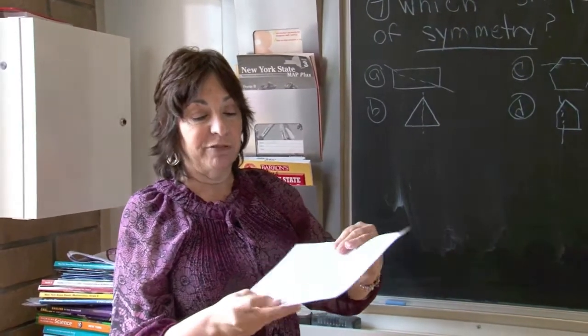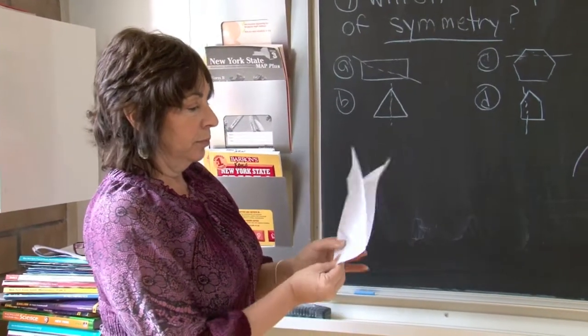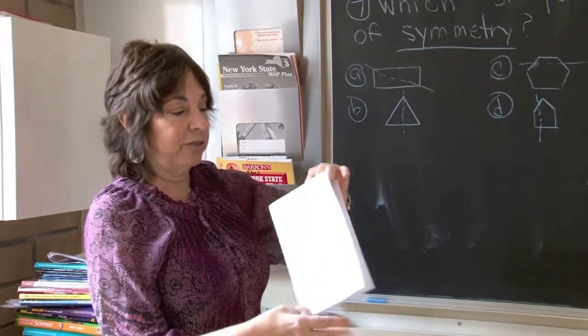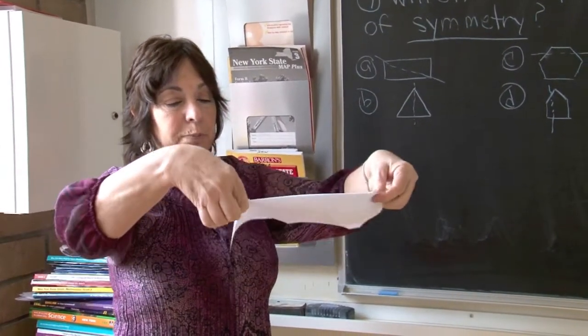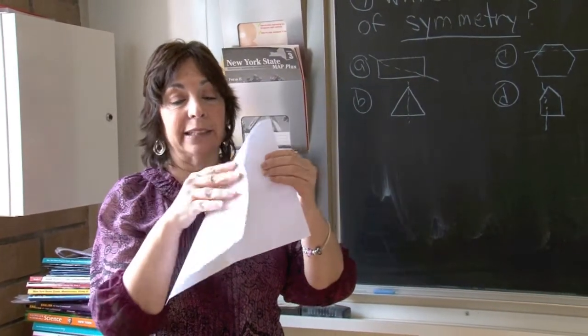A rectangle does have a line of symmetry if I was to fold it in half this way vertically, or if I was to fold it in half horizontally. It would be the same flip over, but it will not be exactly the same across the diagonal.